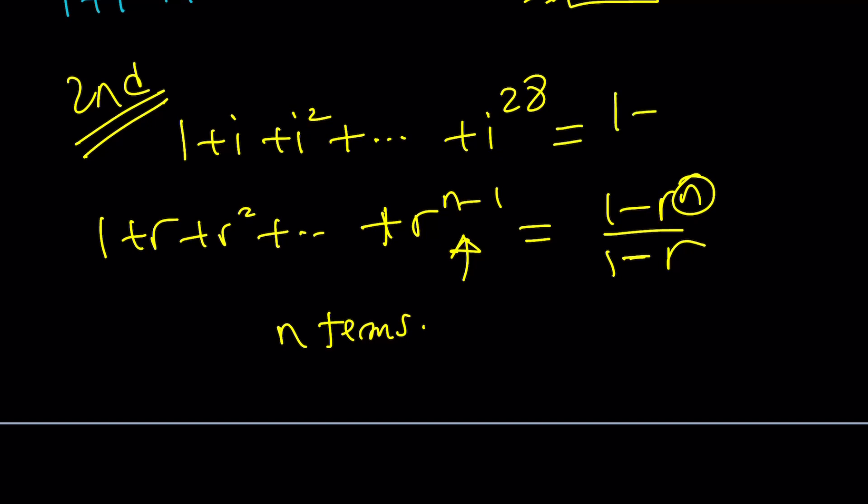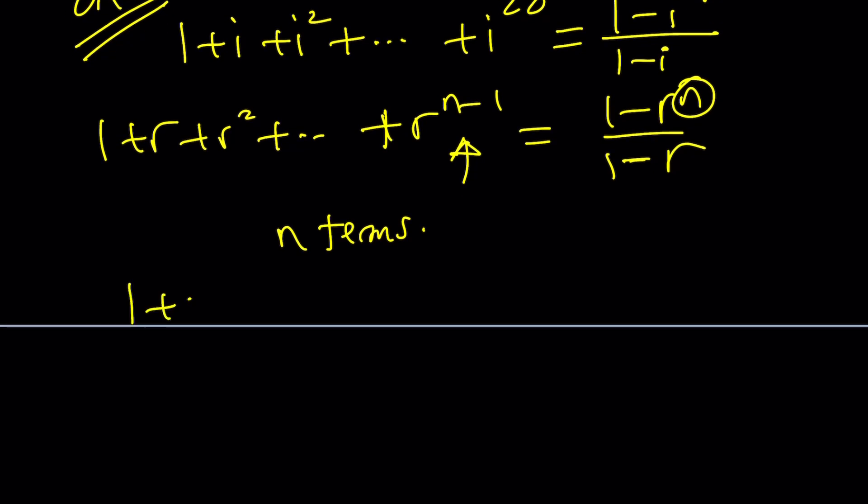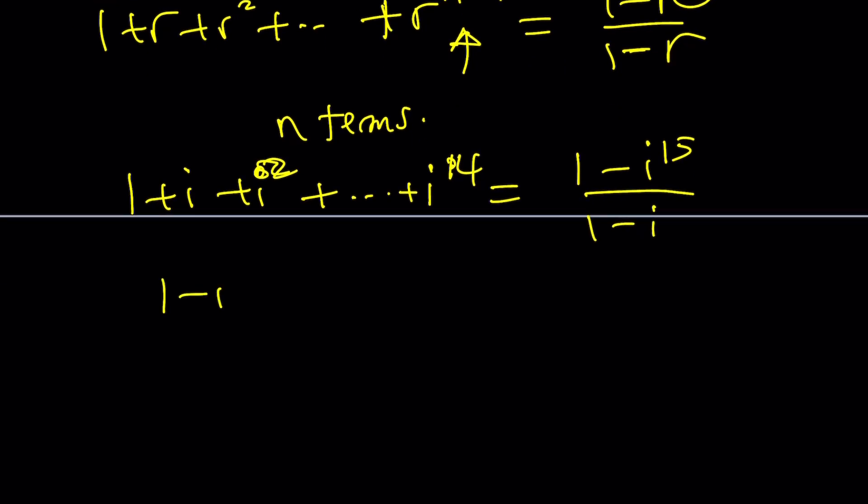So here we're going to get the following. 1 minus, oh by the way, how do you kind of get to r to the n from r to the power n minus 1? You just increase the exponent by 1. So it's going to be 1 minus i to the 29th divided by 1 minus i. And we can say the same thing or something similar for the sum that is up to the 14th power. That's going to be 1 minus i to the 15th divided by 1 minus i. So now we have the following thing. 1 minus i to the 29th divided by 1 minus i divided by 1 minus i to the 15th divided by 1 minus i. 1 minus i cancels out because it's not 0.